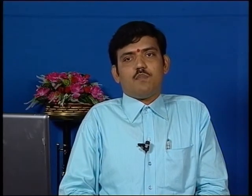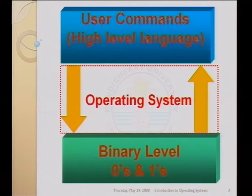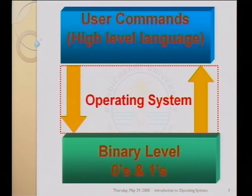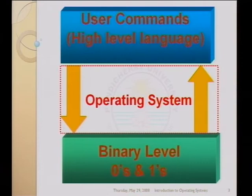The computer operates at the binary level, that is zeros and ones. The user cannot interact with the binary numbers. The user will be operating at the high level language like English. So naturally we need a translator which will convert this natural language into binary level, and binary language again back into the natural language. This conversion is being done by the operating system.